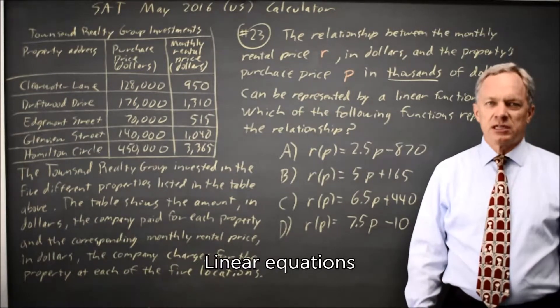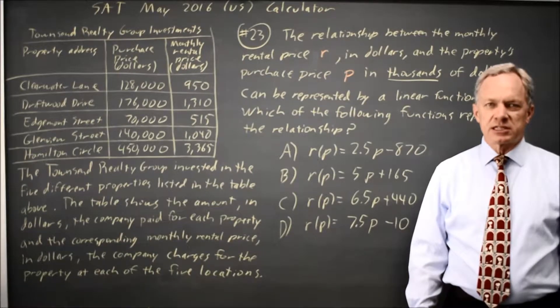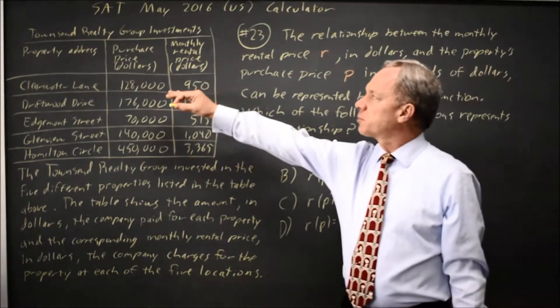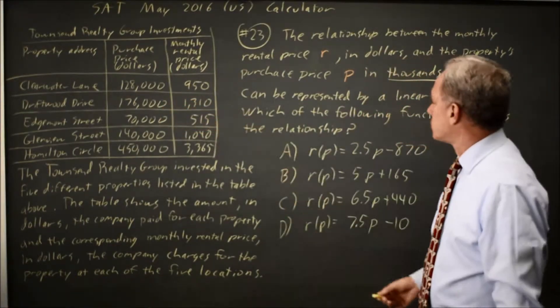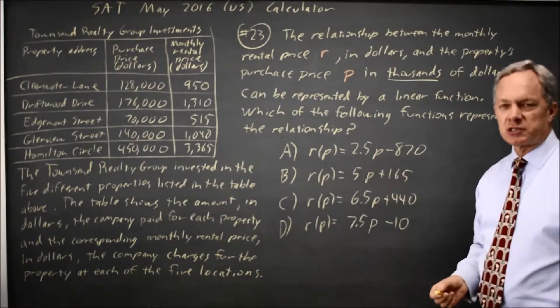This is Calculator Question Number 23 in Practice Test 5. It's also the May 2016 SAT. College Board gives us a table with purchase price and rental price for several real estate locations and they ask which of these equations gives the rental price as a function of purchase price.